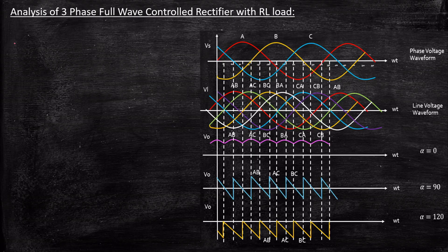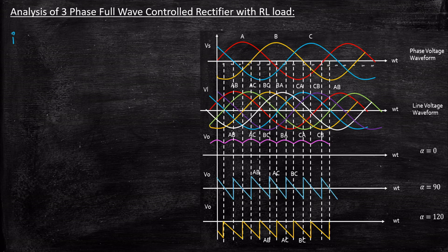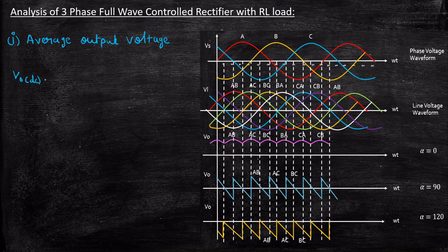Let us start with the average output voltage. The average output voltage is given by the notation Vout DC, and it is equal to 1 divided by the total time period. The total time period, if you consider this particular waveform, is pi by 3, because we are triggering each interval for a duration of pi by 3, that is 60 degrees, as seen in the operation. So the total time period here is equal to pi by 3.